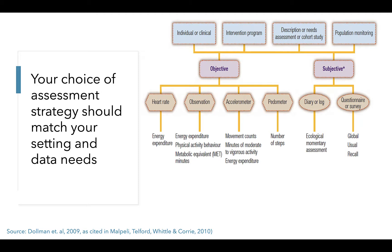In intervention programs, research studies, or population monitoring efforts, some combination of objective and subjective measures, or just subjective measures, may better fit the resources and data needs you have. In some situations, highly precise data are not needed, so just obtaining good enough data to determine general patterns can be the right fit for your time and resources. In other situations, extremely precise data is needed and is worth the extra time and expense.